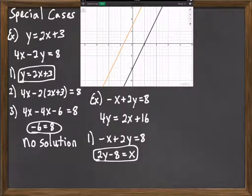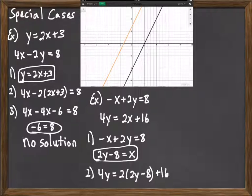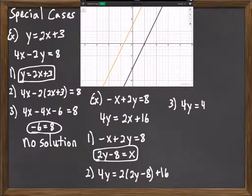And then once I've solved one of the equations for one of the variables, I go to the other equation, so the 4y. Replace the x with 2y minus 8. And so I have 4y equals 2 times 2y minus 8 plus 16. And then I proceed to solve that equation.